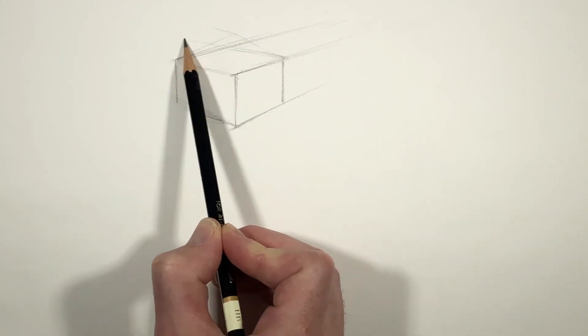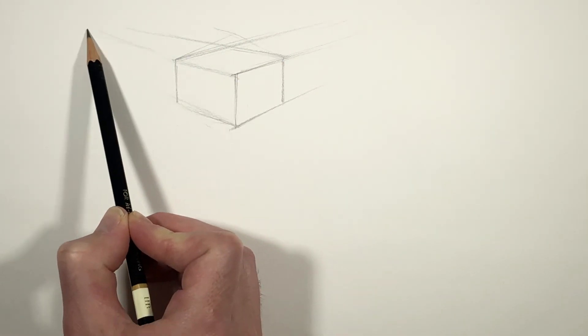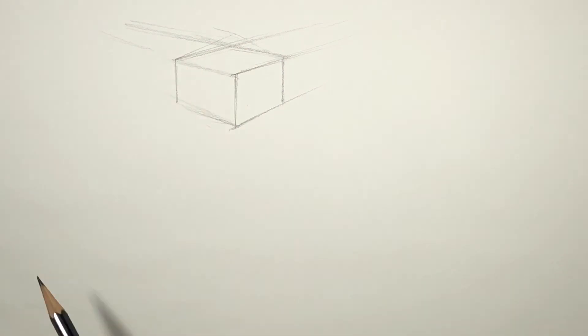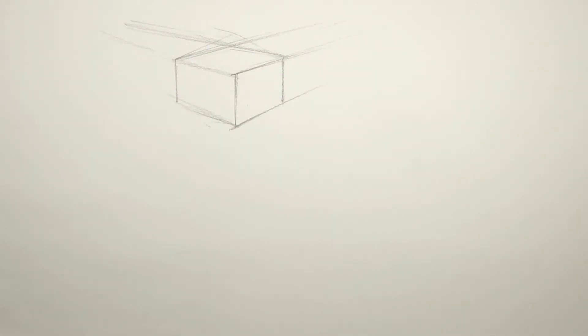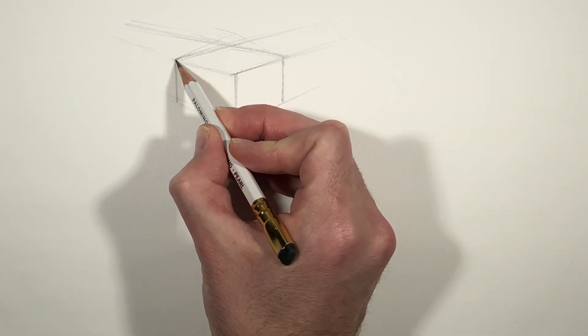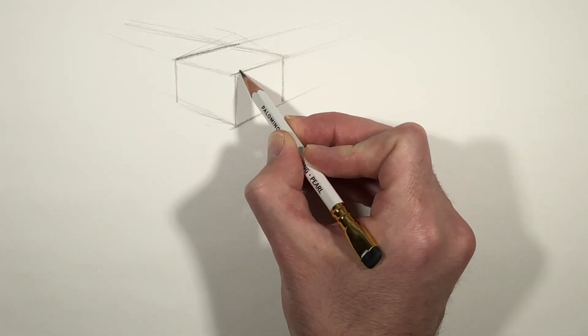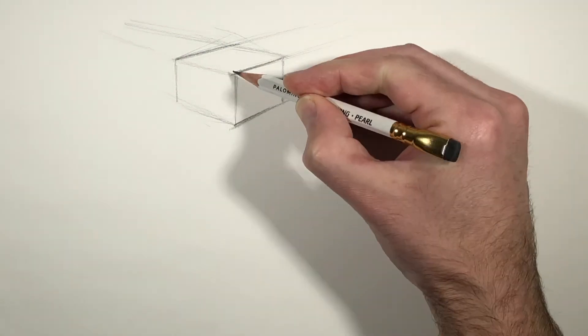And in the same way over on this side, we want this to be going closer and closer to where this line will be. Maybe around there. And notice how sketchy I'm being with it. I'm never right on the first try so I have to kind of sketch my way through it. And now I have a pretty decent idea of where I want to be so I can come back in and lock in my lines a bit more boldly.